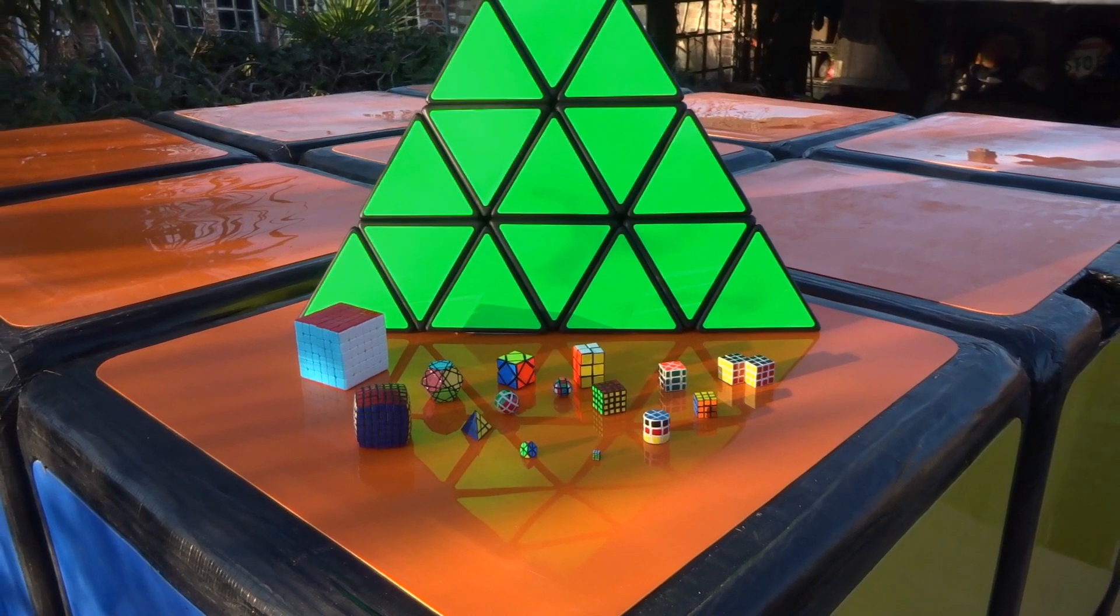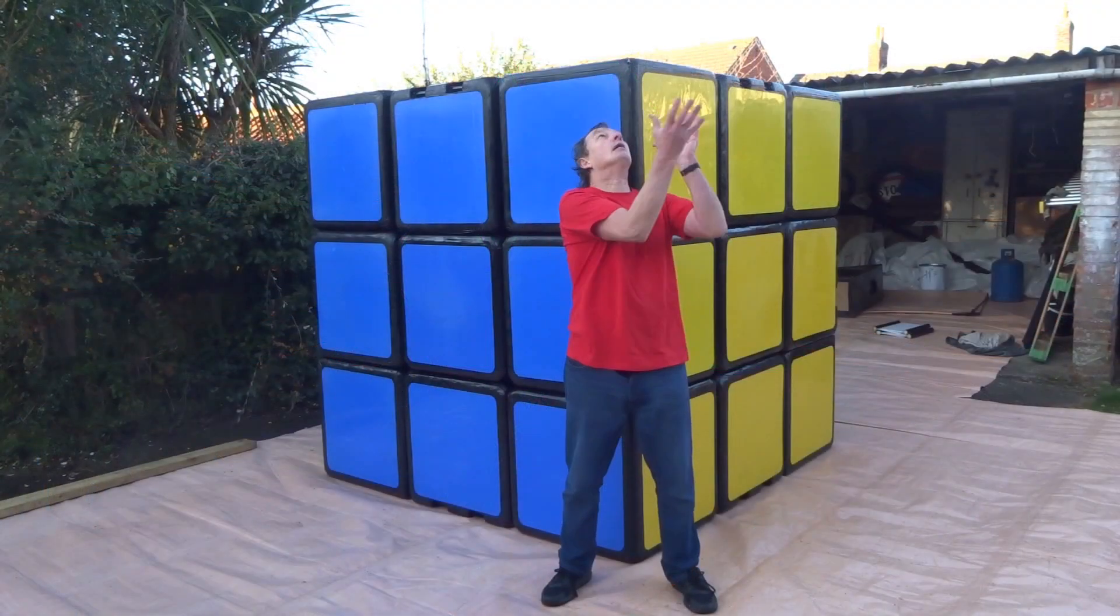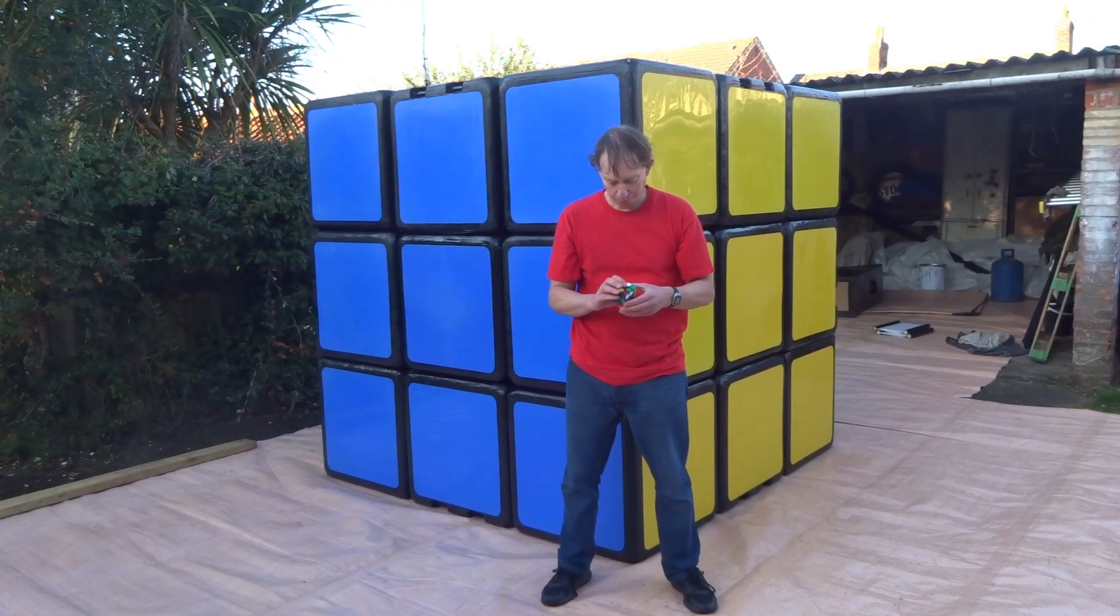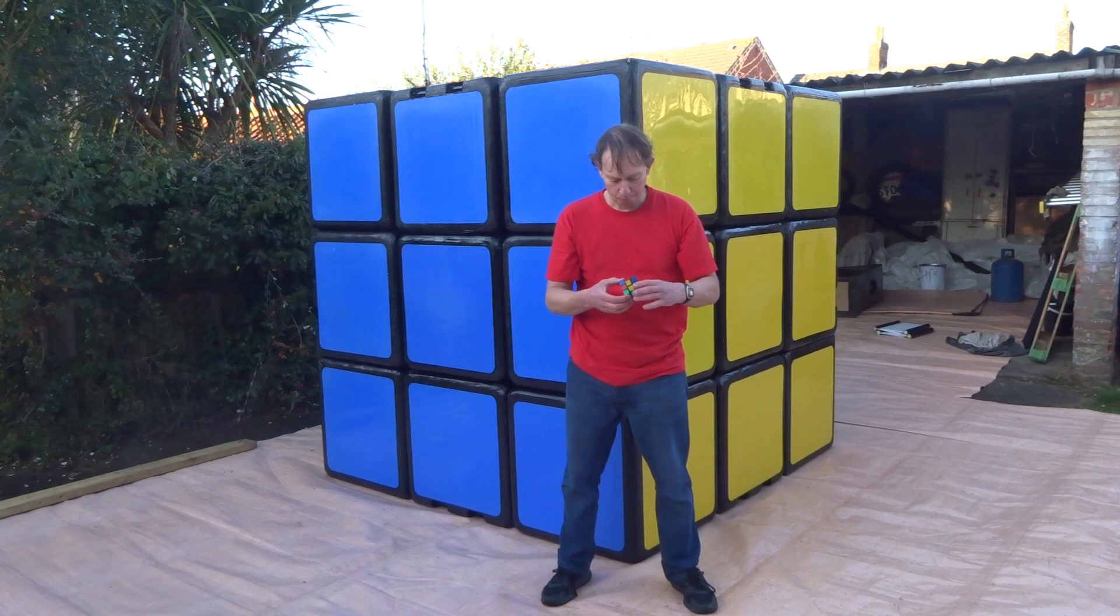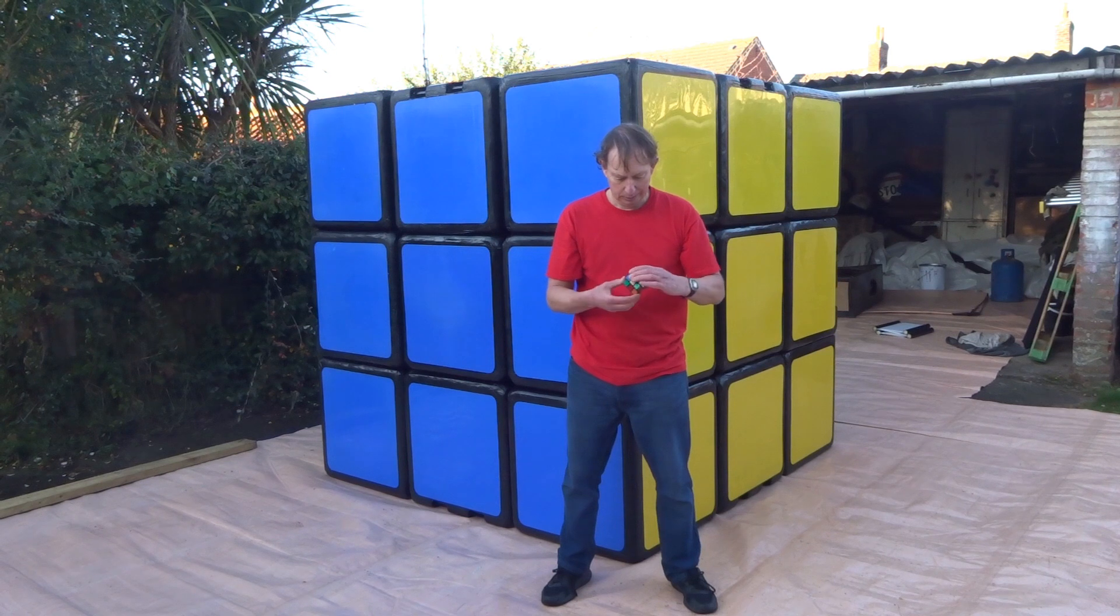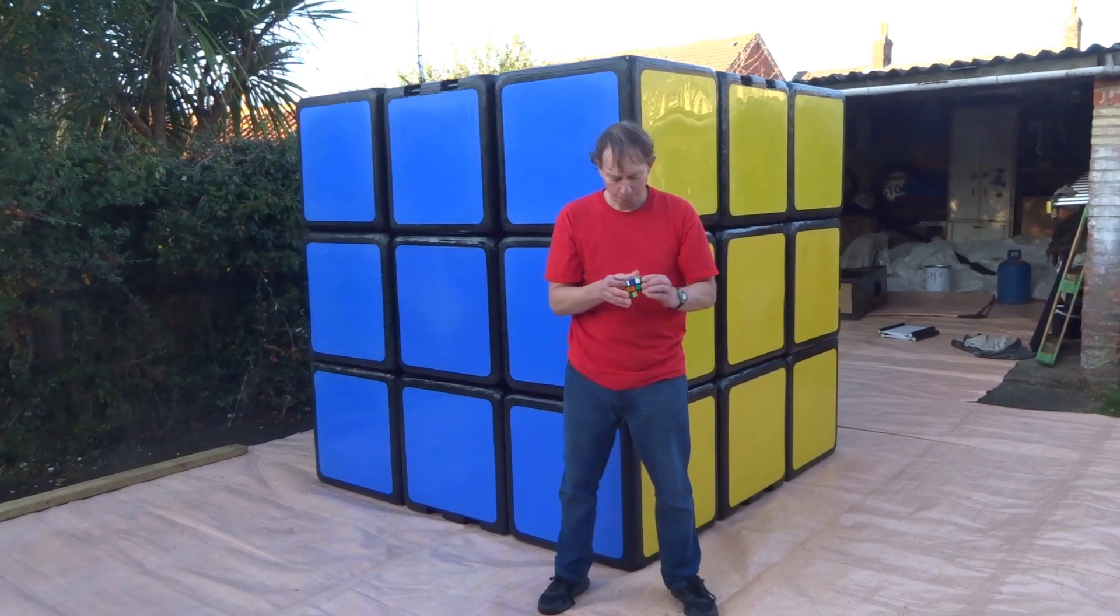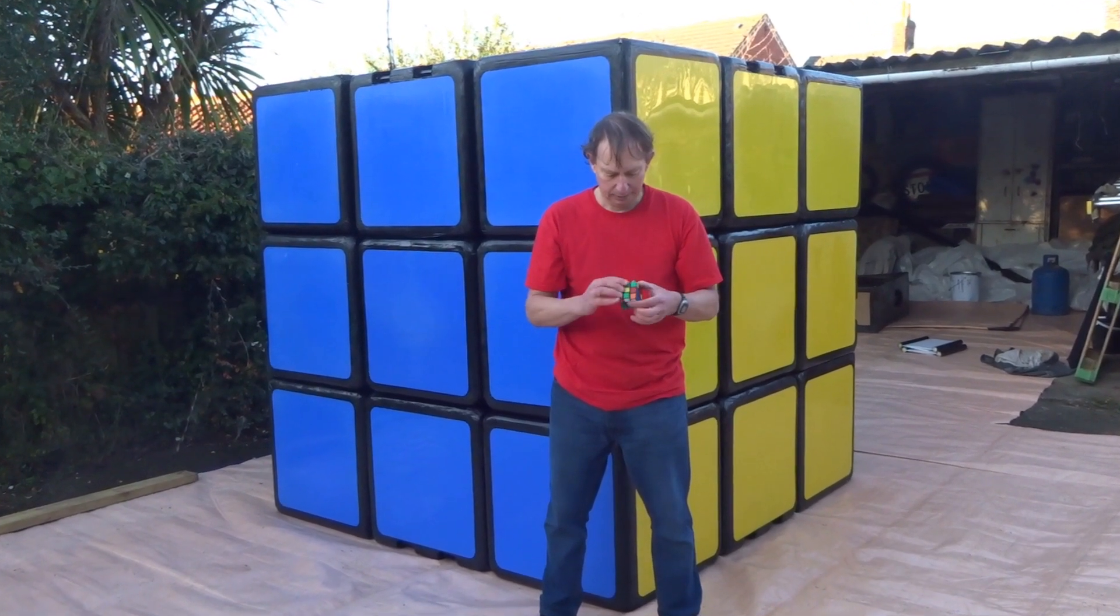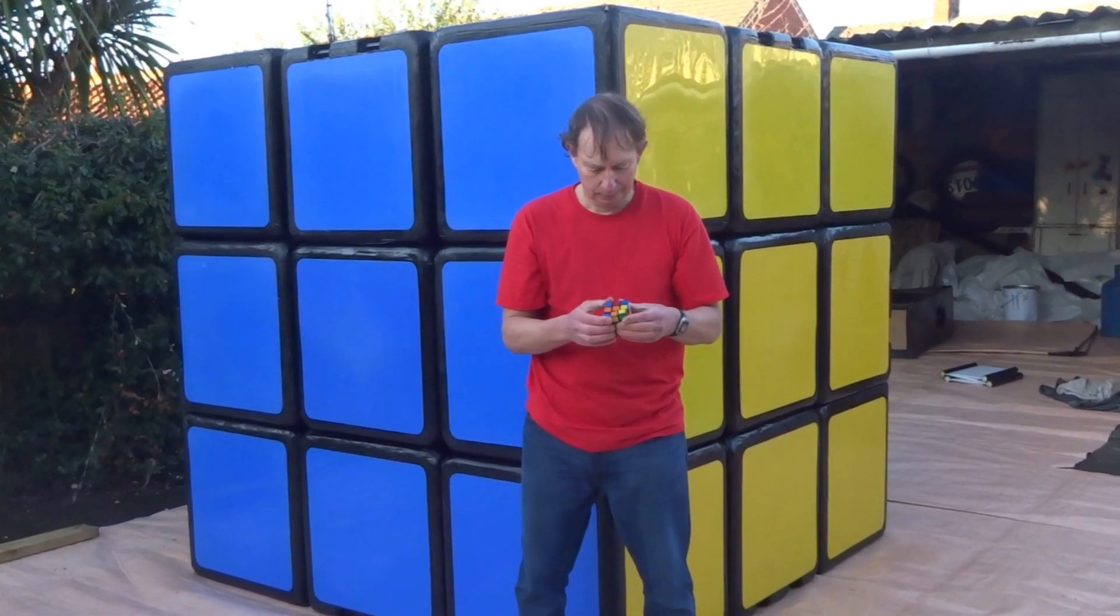And finally, the puzzle I haven't compared it to yet: a regular Rubik's cube. A standard 57 millimeter cube would fit inside my giant one over 44,000 times. A regular cube has over 43 quintillion permutations, whereas my giant cube has exactly the same, obviously.